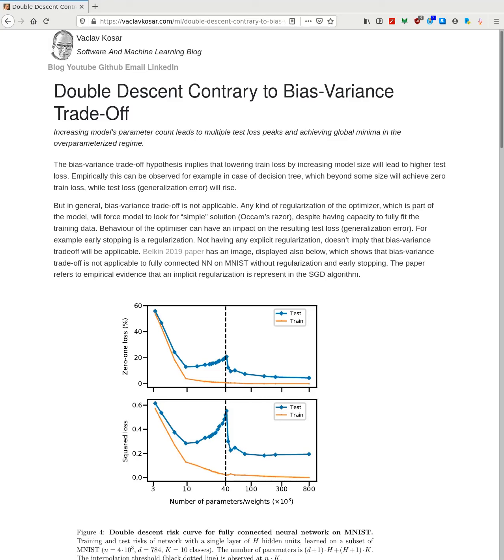So the behavior of the optimizer can have a big impact on the resulting test loss, the generalization loss. For example, even early stopping is a regularization. And in this paper of Belkin 2019, from which I use one image over here and I draw on lots of knowledge about this topic, I recommend this one. And they imply there that even not knowing about having a regularization can still mean that the bias variance trade-off will not predict anything useful.